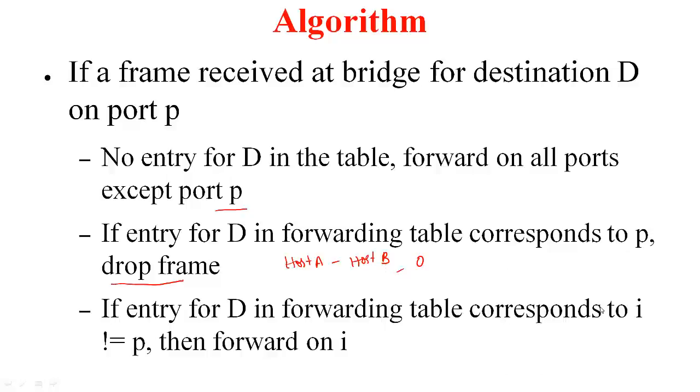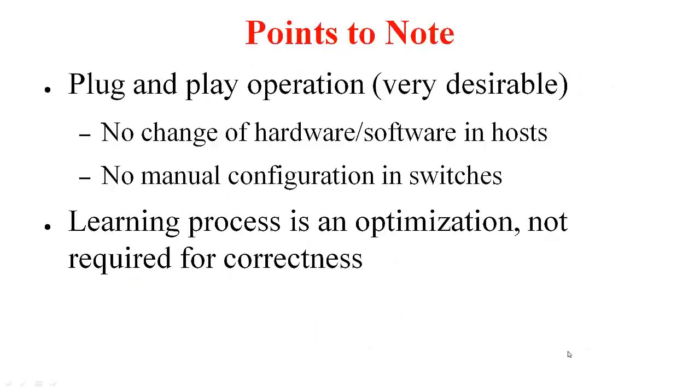Now, the other case is if entry for D in the forwarding table corresponds to some other port I which is not equal to P, then you forward just on I, not on the other ports. Very simple algorithm. The beauty of this is that it permits a plug and play operation and this is very desirable when you are administering networks. You do not have to change the hardware software in the host. You do not have to do any manual configuration in the switches. All you need to do is interconnect the segments of the host through switches and you are done. The switches manage everything.